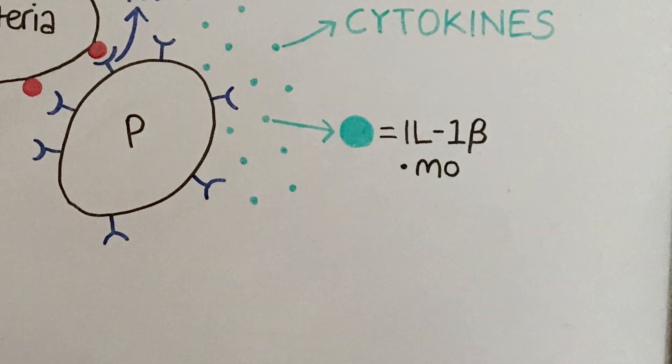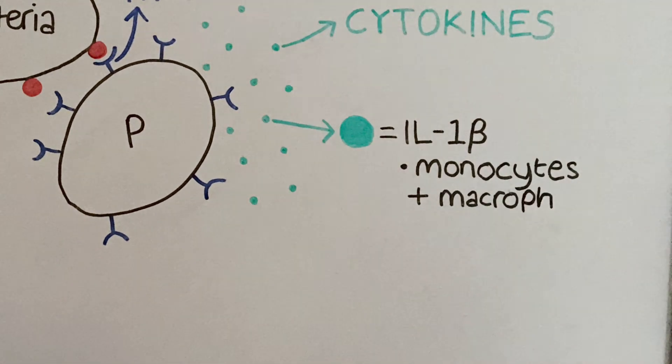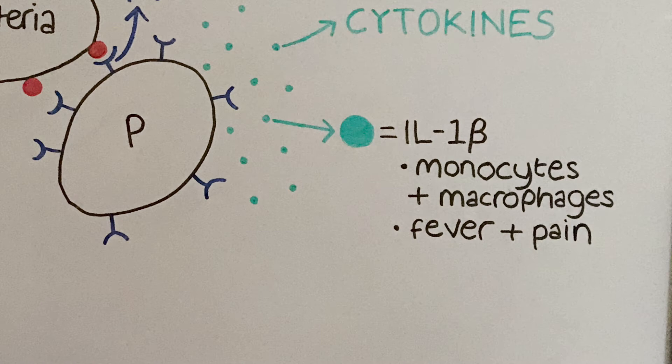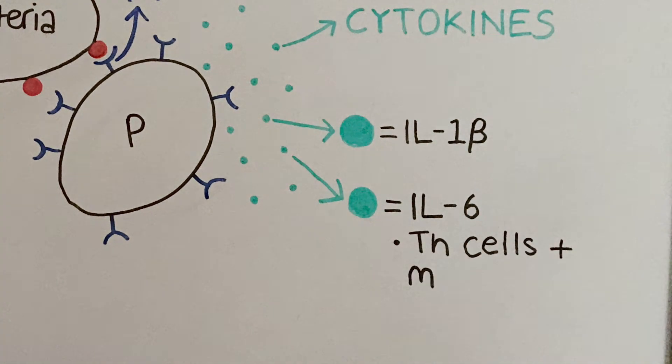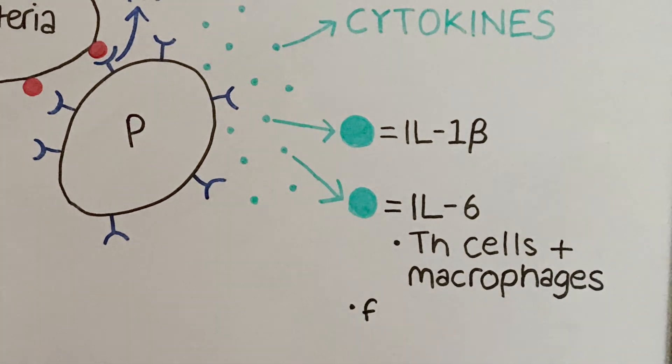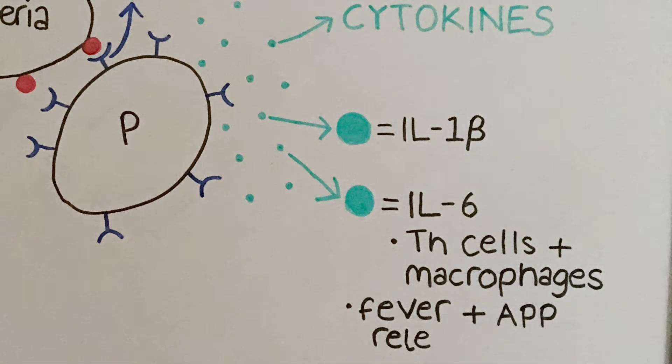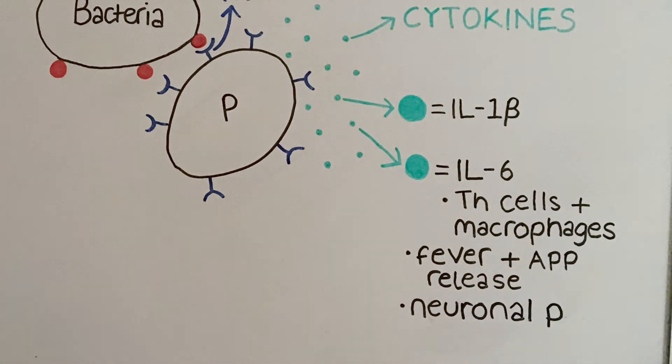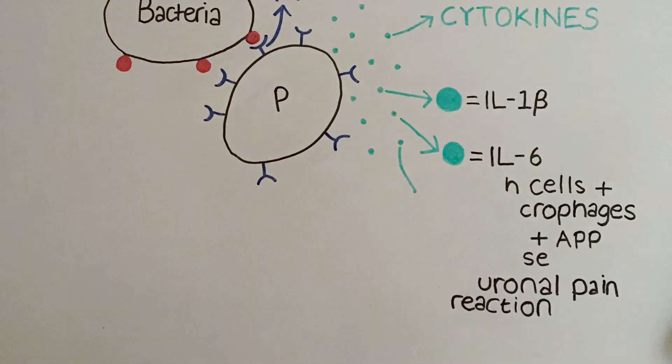Interleukin 1 beta is a pro-inflammatory cytokine released by monocytes and macrophages. It causes fever and pain. Interleukin 6 is another pro-inflammatory cytokine released by T-helper 1 cells and macrophages. This cytokine causes fever, acute phase protein release, and it also plays a role in the neuronal pain reaction to peripheral nerve injury.